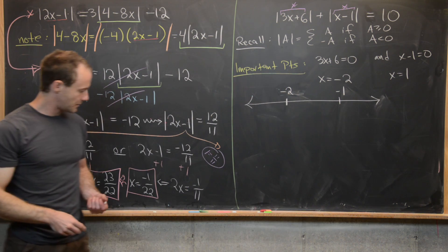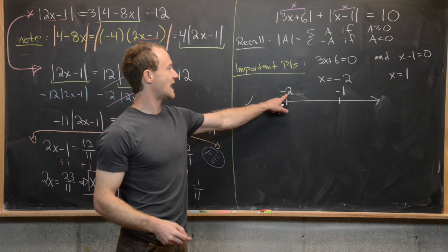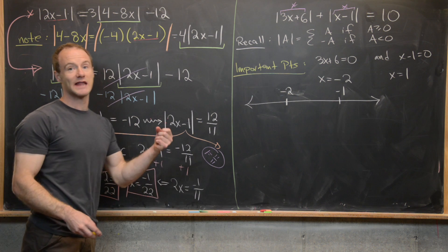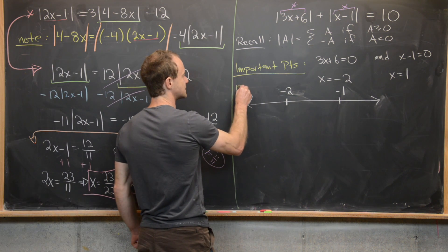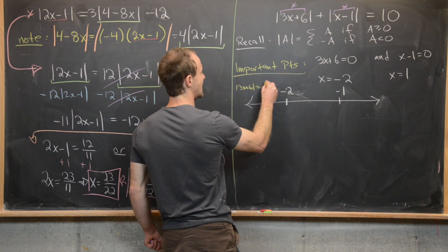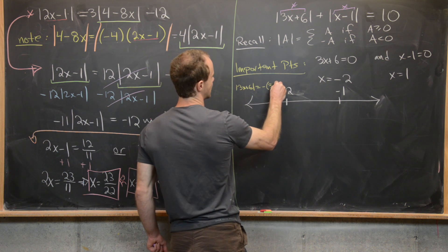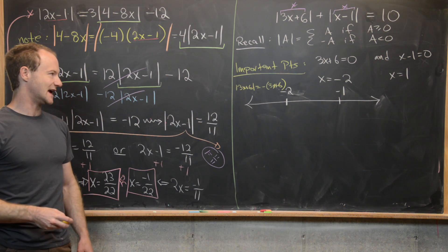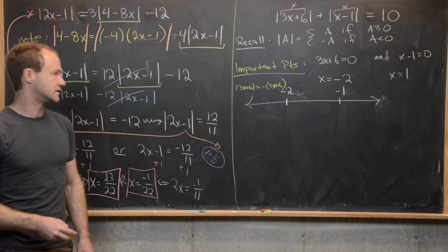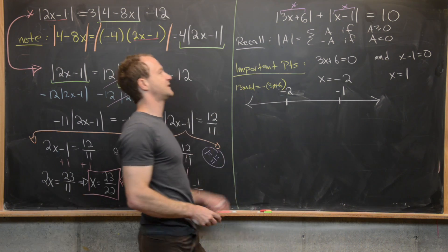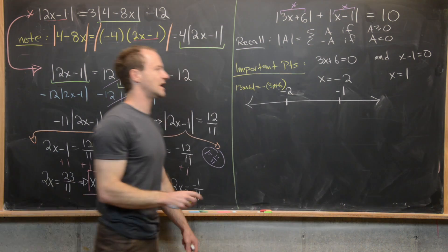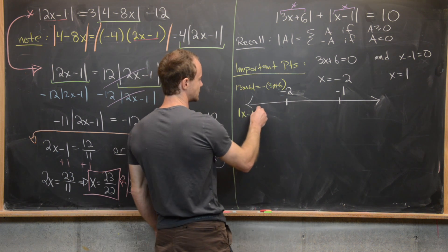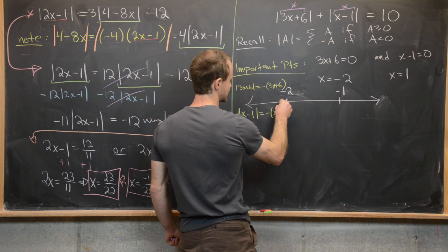If we are to the left of negative 2, then 3x plus 6 is less than 0, which means the absolute value of 3x plus 6 equals negative 3x plus 6, because the interior of that absolute value is negative there. Also, if you're to the left of negative 2, the interior of the absolute value of x minus 1 is also negative, which means the absolute value of x minus 1 equals negative of (x minus 1).